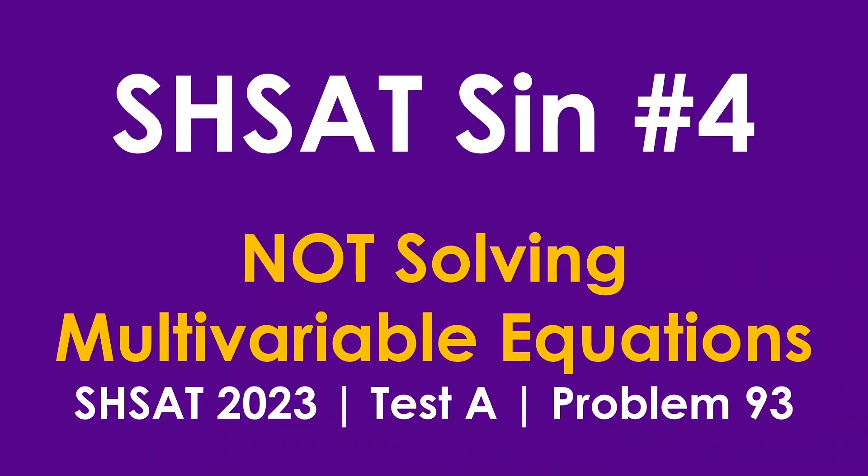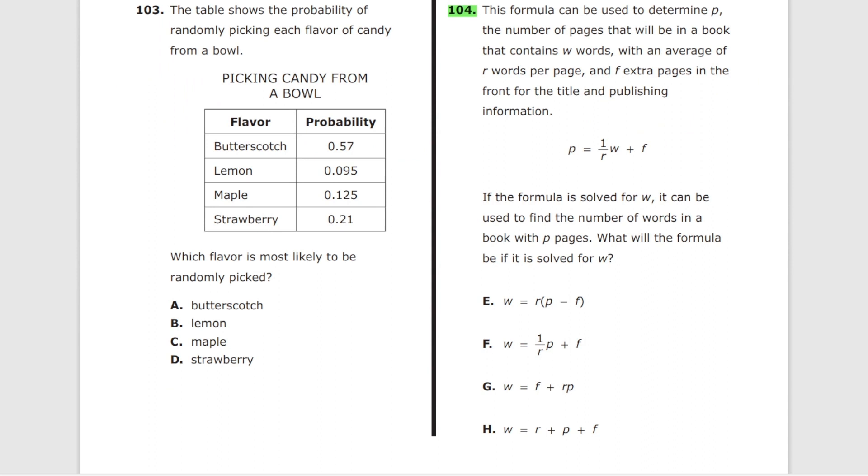SHSAT sin number four is not solving multi-variable equations. We are going to cover problem number 93 from test A of SHSAT 2023. This is a super complicated word problem, right? That's how it seems like. I am not even reading this. I don't care. I'm ignoring this. I'm not going to read this. I don't think I've ever read that paragraph ever.